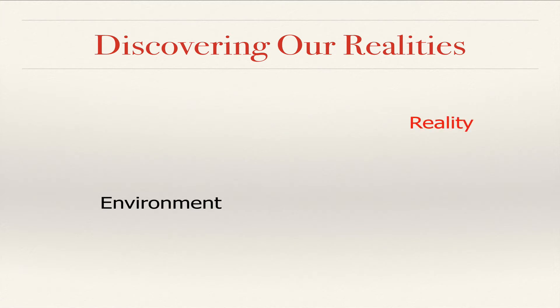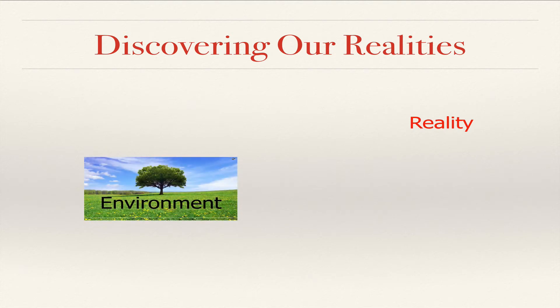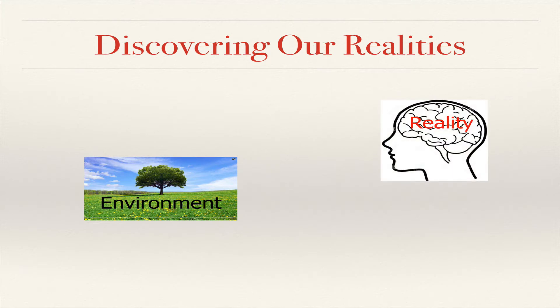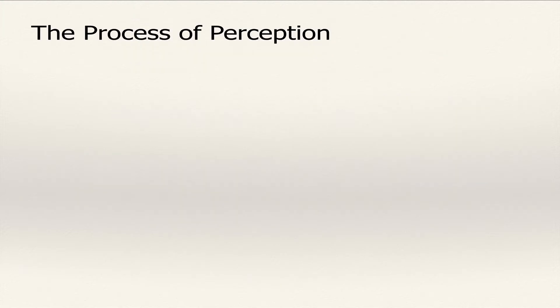The environment is what we all see, what we all experience, like the movie that you saw together is the environment. But reality is what's created in your brain. Reality is your opinion or your interpretation of what the environment was. So we start with the environment, and we create a reality. And we do that by using the process of perception.